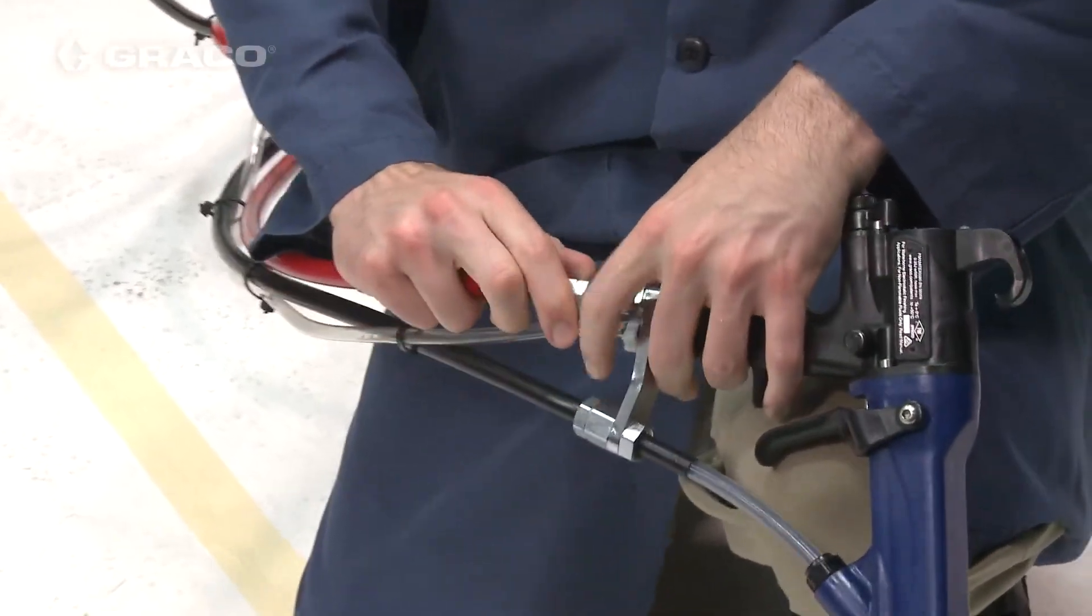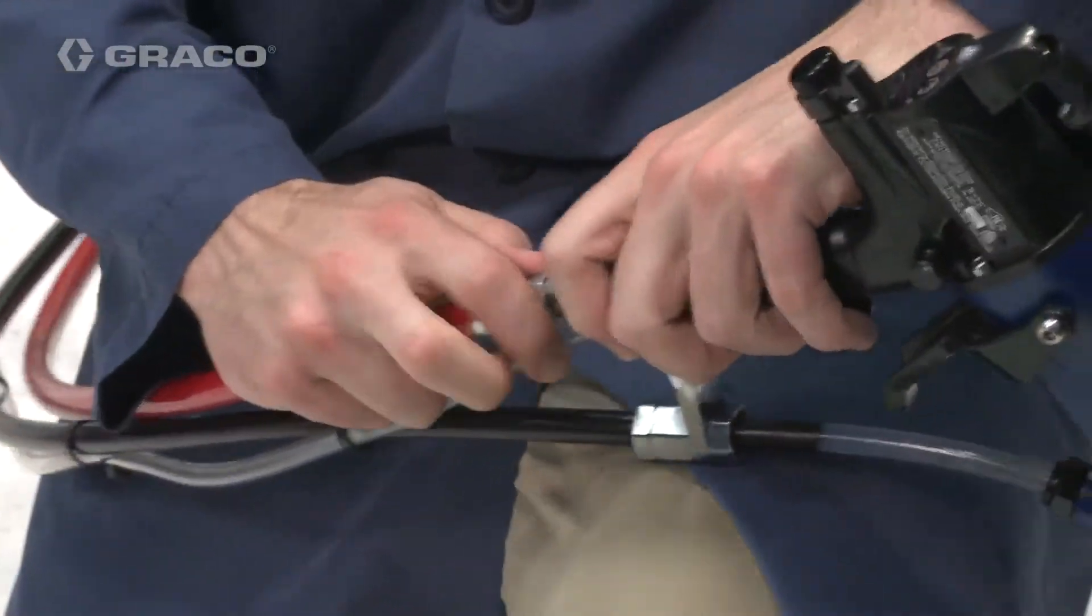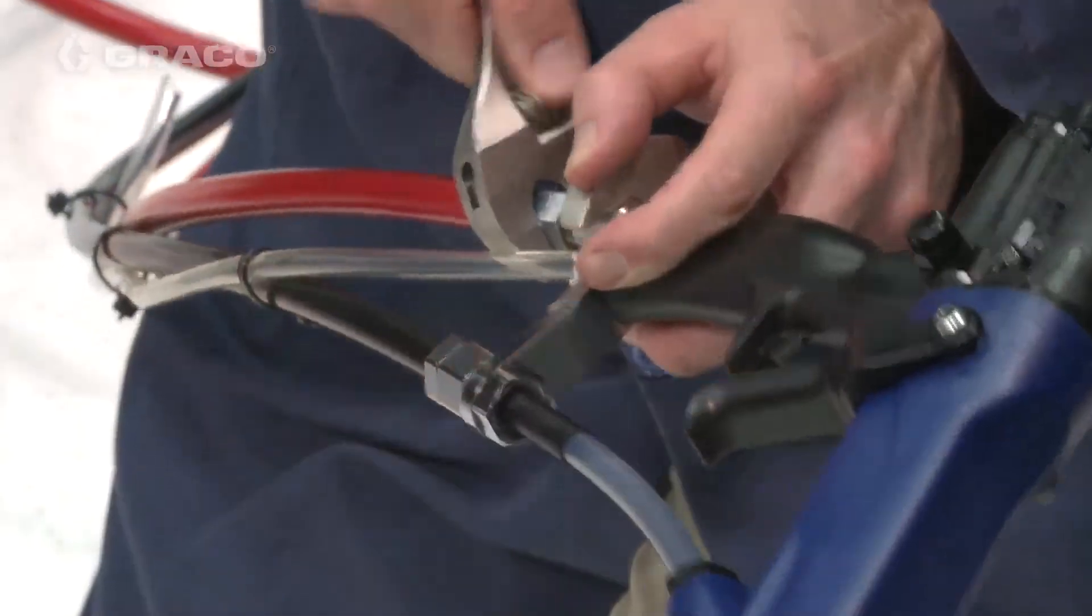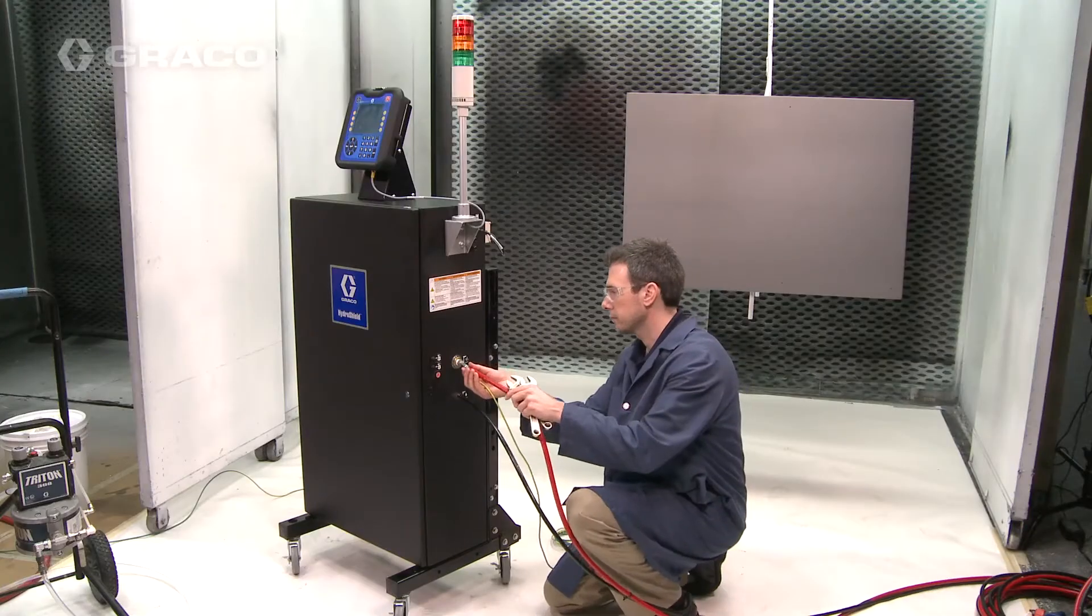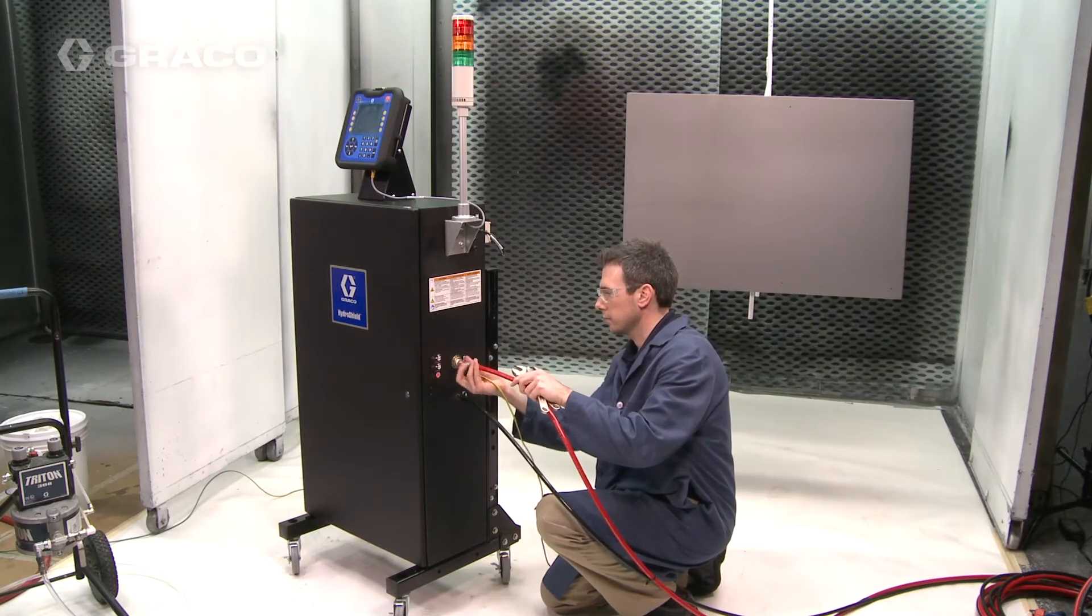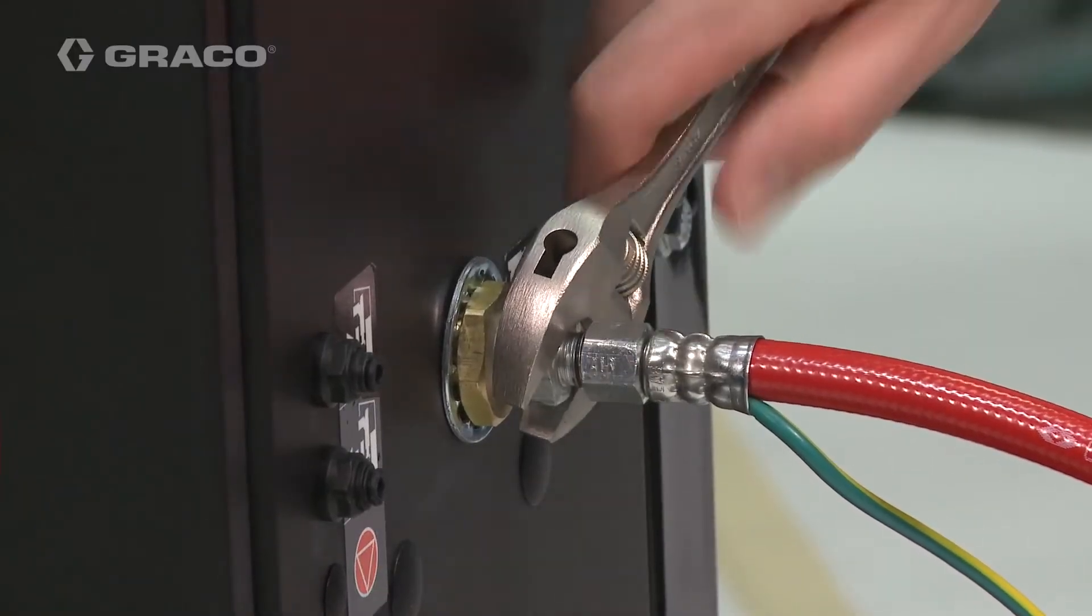Connect the gun air hose to the gun air inlet swivel. Remember, this is a left-handed thread connection.